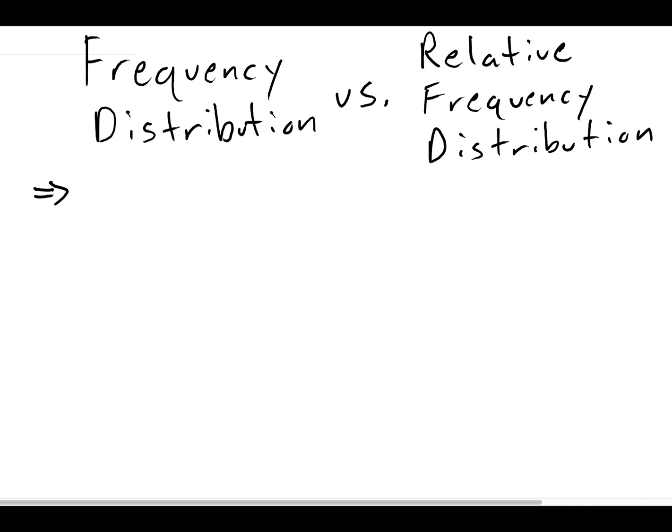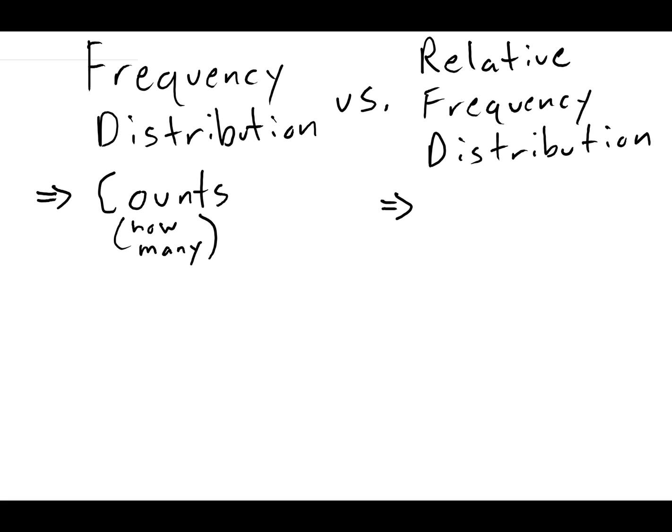To get a bit more fancy schmancy with our distributions, we're going to distinguish between two types of distributions. The first is what's known as a frequency distribution, and the second is what's known as a relative frequency distribution. The frequency distribution just tells us the counts, whereas the relative frequency distribution is going to tell us the proportions. And by proportions, we mean how many out of the total.